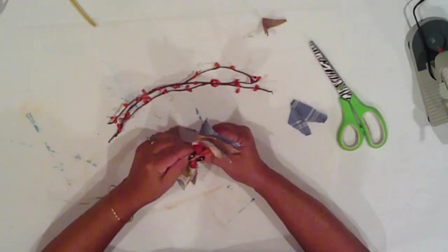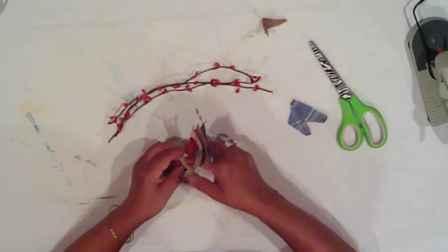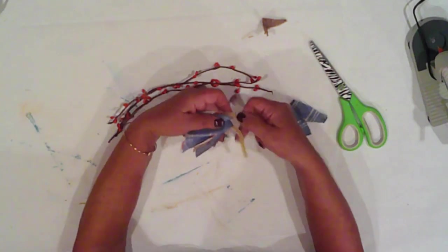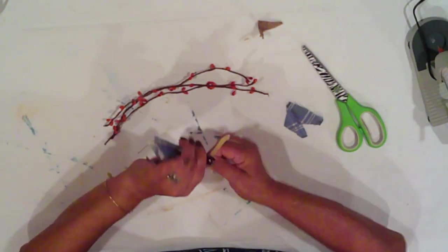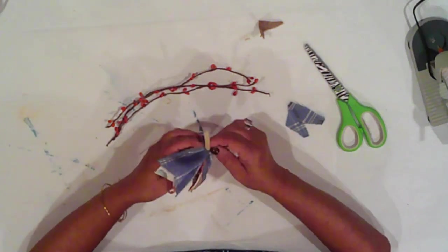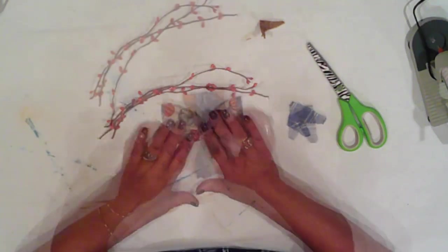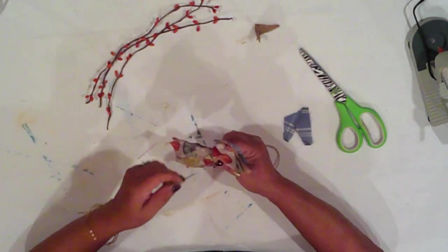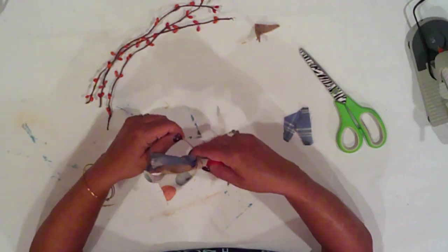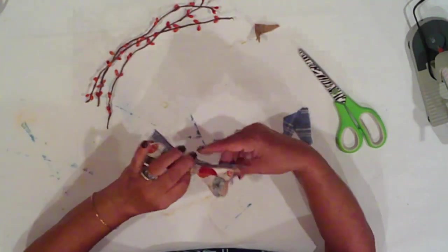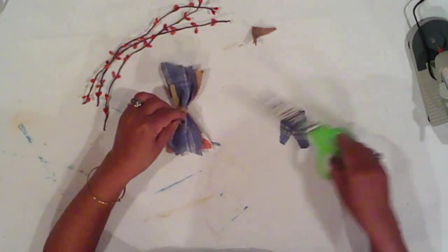Then I'll twist the chenille stem around the center of them. Then I tie some twine around the center to hide the stem. I tie it in the back and cut off the excess.